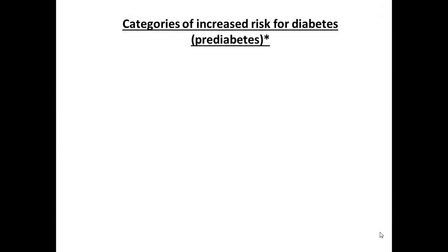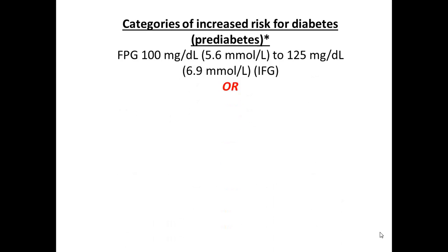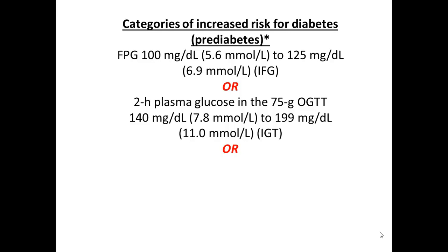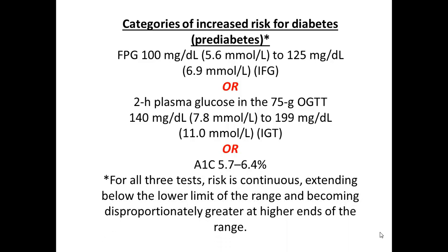In recent years we've understood that catching people in a pre-diabetic state, if treated, can prevent progression to full-blown diabetes. A fasting plasma glucose of 100 to 125 mg/dL is considered pre-diabetic. After a 75-gram anhydrous glucose oral tolerance test, a blood sugar of 140 to 199 is also pre-diabetic. An A1c between 5.7% and 6.4% likewise qualifies. For all three tests, the risk is continuous and becomes disproportionately greater at the higher ends of these ranges.